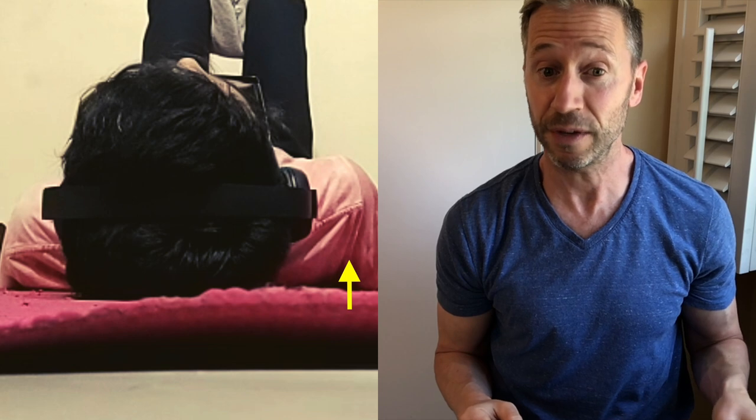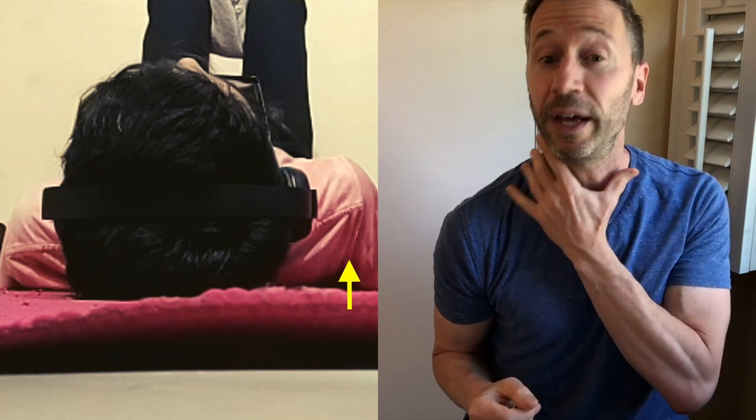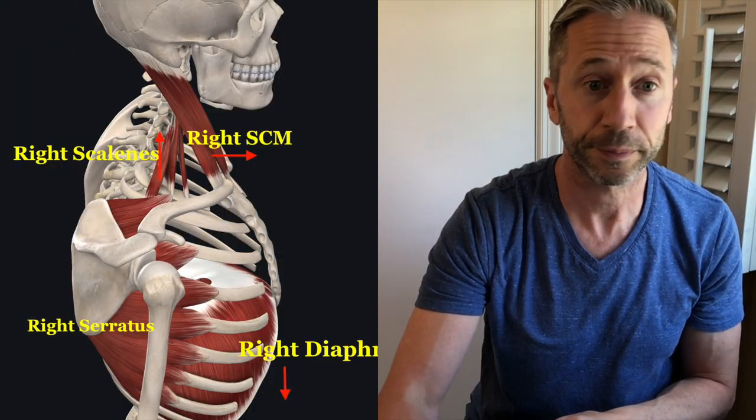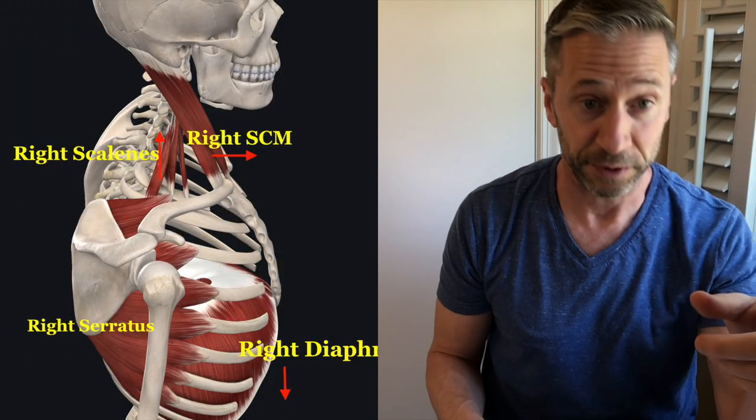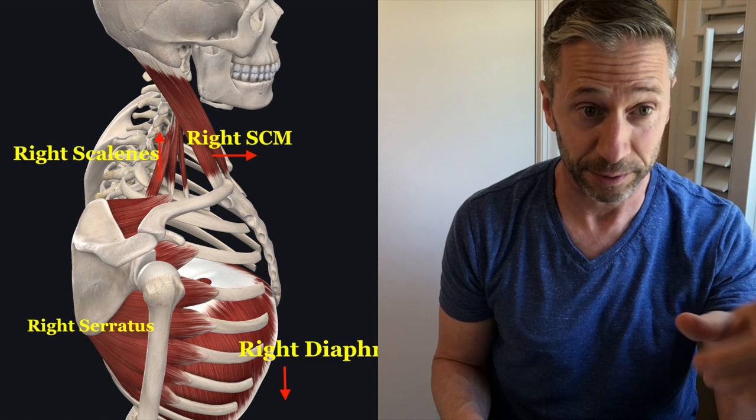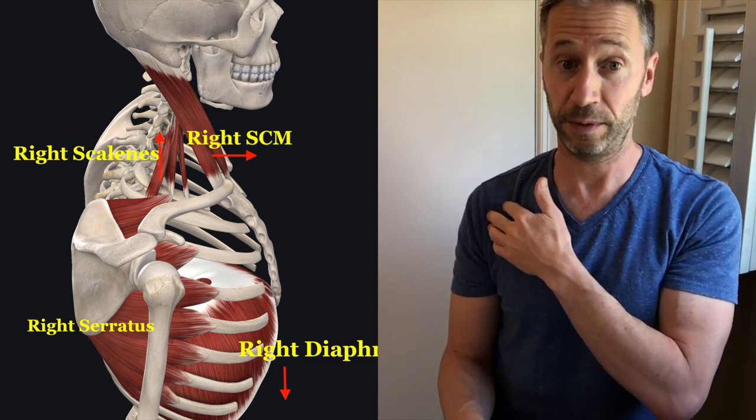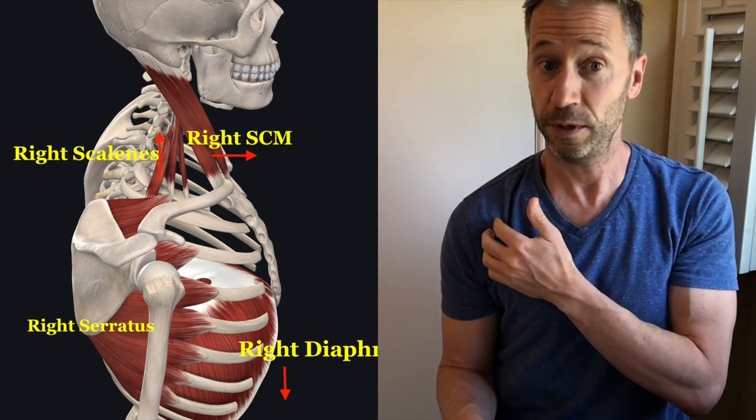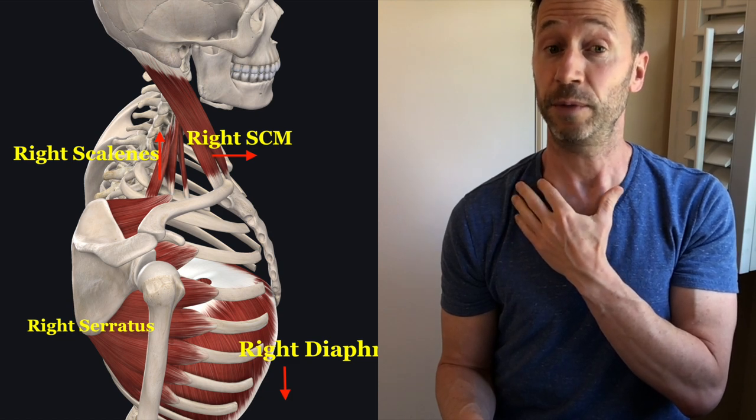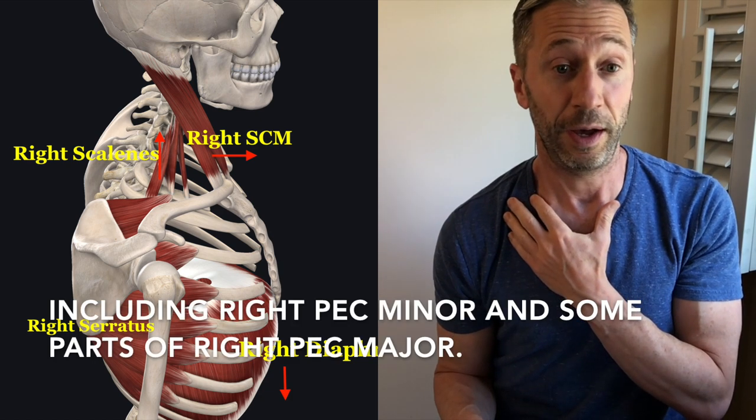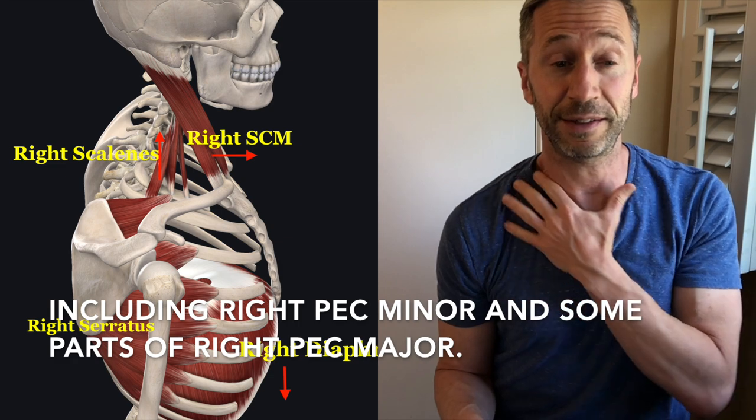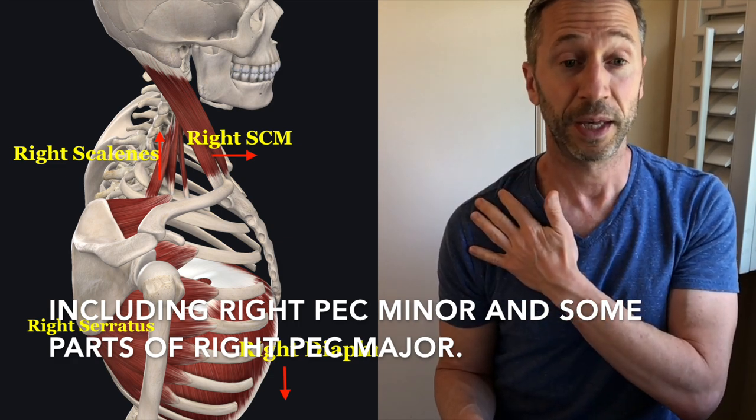When you're in that position, this whole area of your right neck gets compressed. You see the right SCM and right scalenes - the scalenes are pulling up, the SCM is pulling forward and also pulling your head forward. This whole area gets compressed.